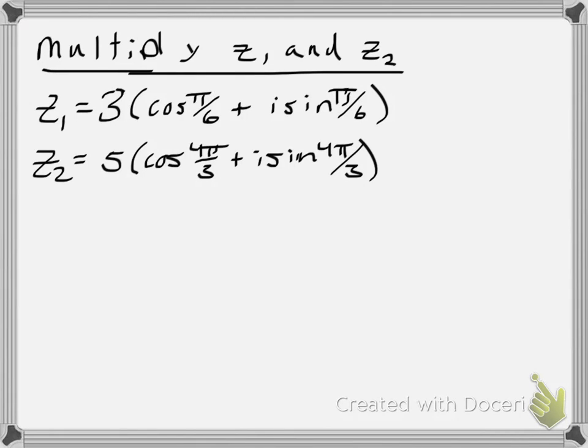Hello everyone, in this video I'm going to look at how to multiply two complex numbers in polar form, usually referred to as z1 and z2. I'm going to multiply the two complex numbers: 3 times cosine of pi over 6 plus i sine of pi over 6, times 5 times the quantity cosine of 4 pi over 3 plus i sine of 4 pi over 3.